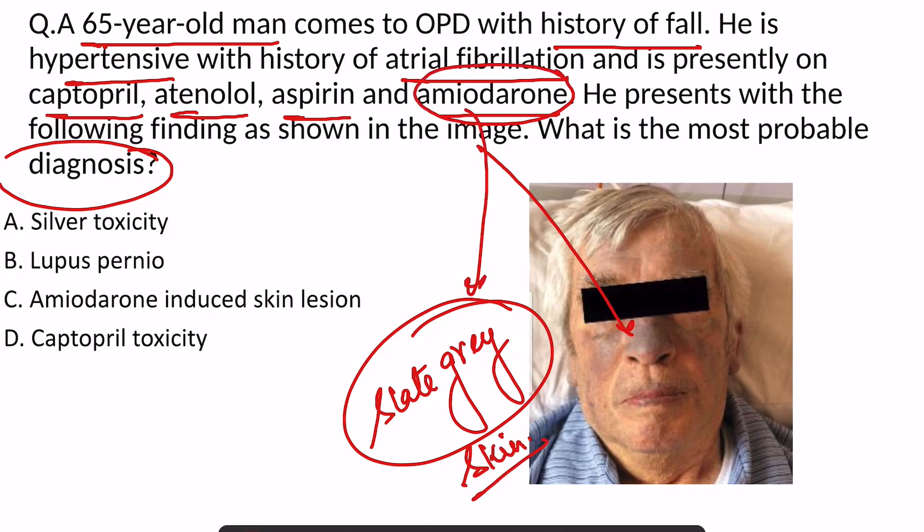The answer is amiodarone-induced skin lesions. These are generally bluish or slate gray in color. Patients who continue taking this drug at higher doses for a prolonged period may develop such pigmentation. This is another patient developing amiodarone-induced skin pigmentation. I hope this information was useful. Thank you very much.